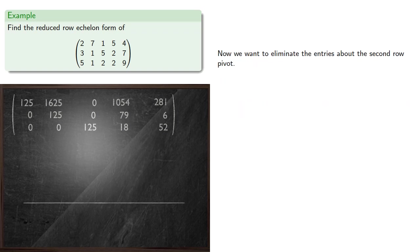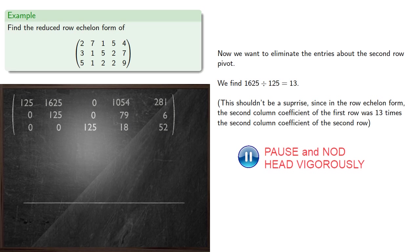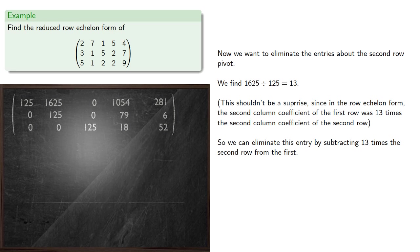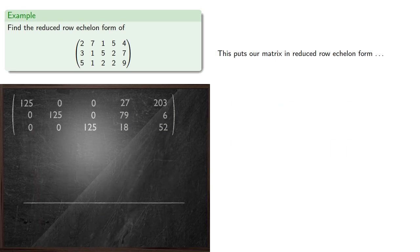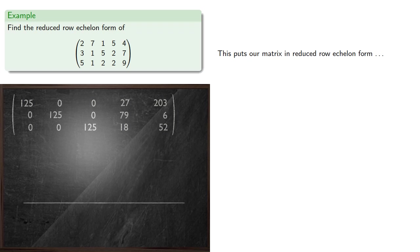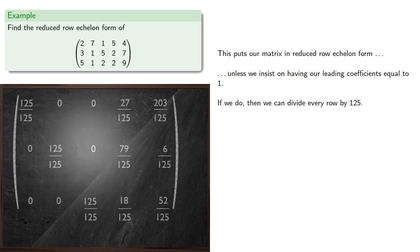Now we want to eliminate the entries above the second row pivot. We find that the second column coefficient of the first row was 13 times the second column coefficient of the second row, so we can eliminate this entry by subtracting 13 times the second row from the first. This puts our matrix in reduced row echelon form, unless we insist on having our leading coefficients equal to 1. If we do, then we can divide every row by 125 and make the obvious simplifications.